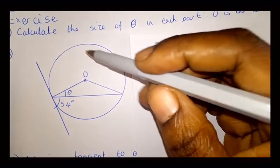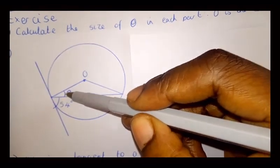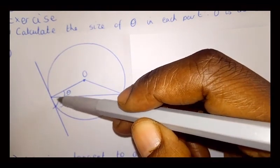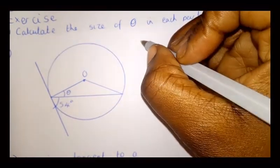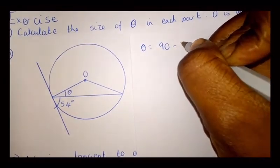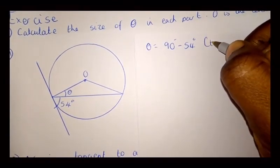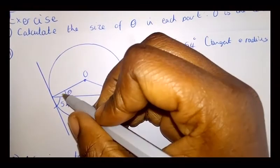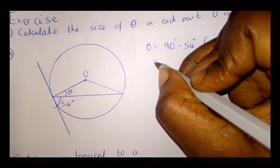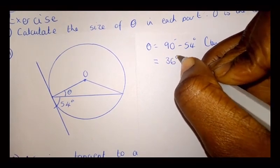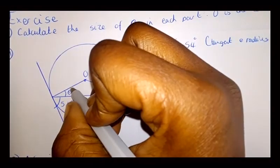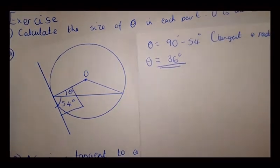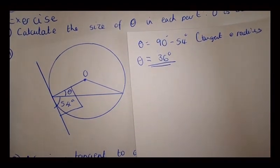We start with part one and find angle theta. We can see this is a radius and this is a tangent, so the whole angle is equal to 90 degrees. Therefore theta equals 90 minus 54 degrees, because the tangent and radius are perpendicular. Theta equals 36 degrees, and we can verify: 36 plus 54 equals 90.